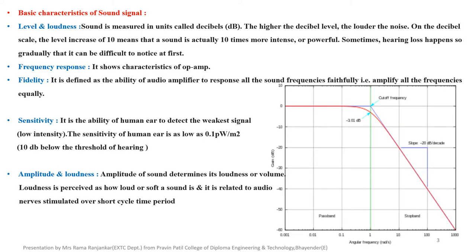These are the basic characteristics of sound signal. Level and loudness: sound is measured in units called decibels. Higher the decibel level, louder the noise. On the decibel scale, a level increase of 10 means that sound is actually 10 times more intense or powerful.